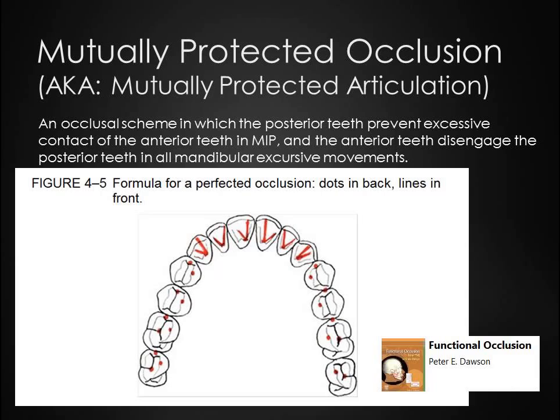When a patient loses posterior teeth, it damages the anterior teeth, and therefore restoration of the anterior teeth cannot have long-term success unless the posterior teeth are somehow replaced. Options for replacement include implants and removable partial dentures as well as fixed partial dentures.